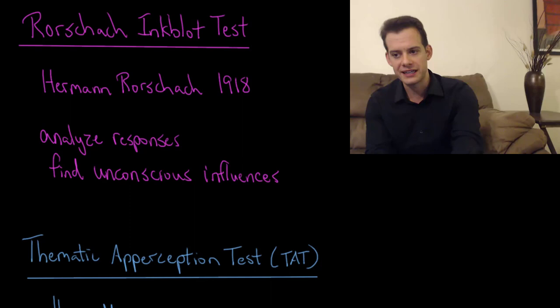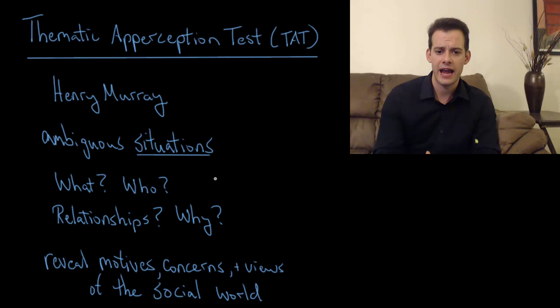Okay, the next projective technique that we'll look at is called the thematic apperception test and this was created by Henry Murray. Rather than looking at these blots of ink here that are ambiguous stimuli, what Murray asked participants to do was look at situations. So they looked at a series of cards and these cards were not ambiguous in that they clearly had certain things in them.